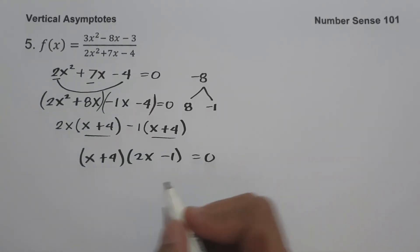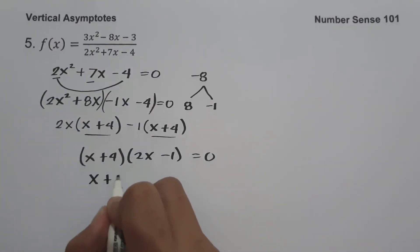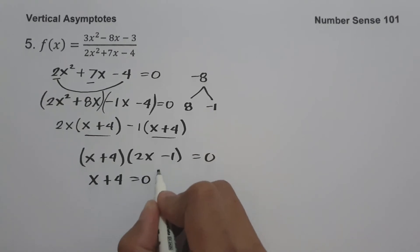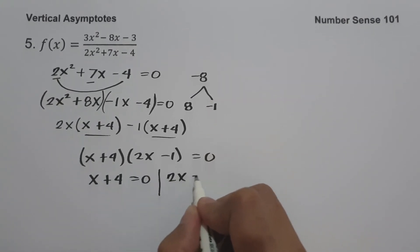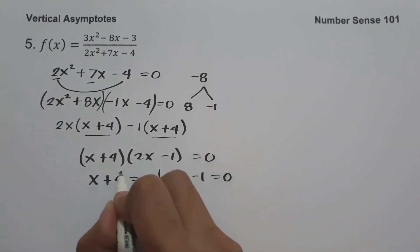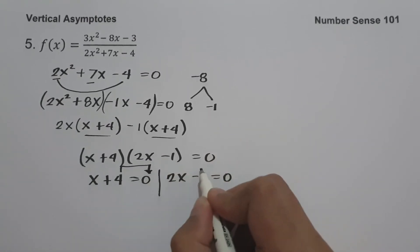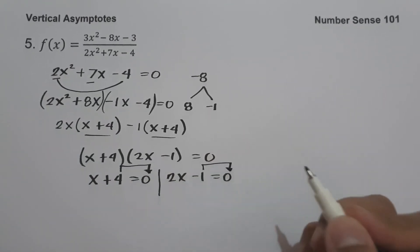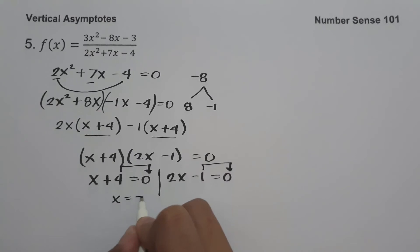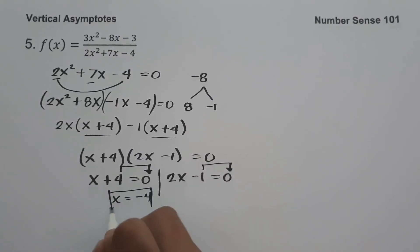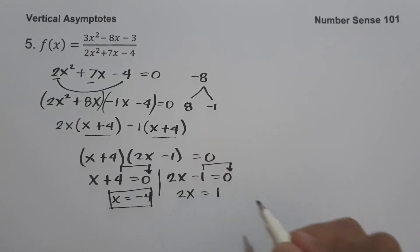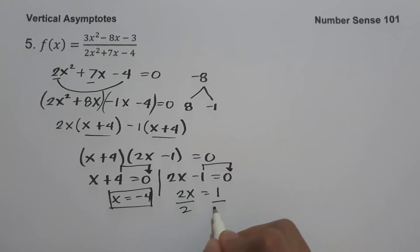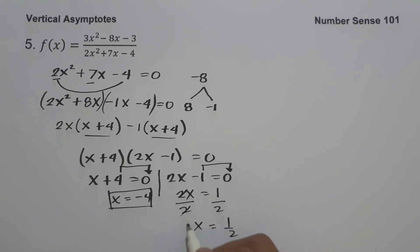So let us equate to 0. This will be x plus 4 equal to 0 and 2x minus 1 equal to 0. Moving 4 to the other side gives x equals negative 4. For 2x equals 1, let us divide both sides by 2, giving us x equals 1 half. So the vertical asymptotes are x equals negative 4 and x equals 1 half.